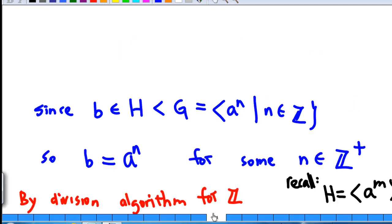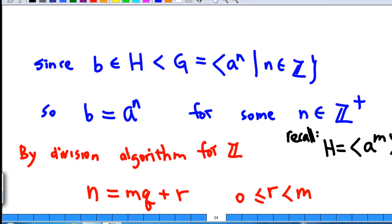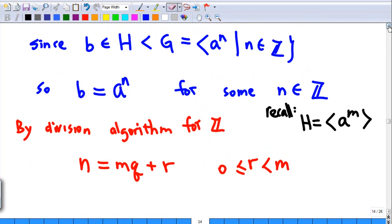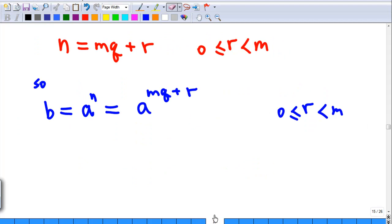Now, apply the division algorithm. We know that we can divide n by m. Then there will be a quotient q and remainder r, where r is an integer less than m and greater than or equal to zero. Which means b equals a power n, which equals a power mq plus r.